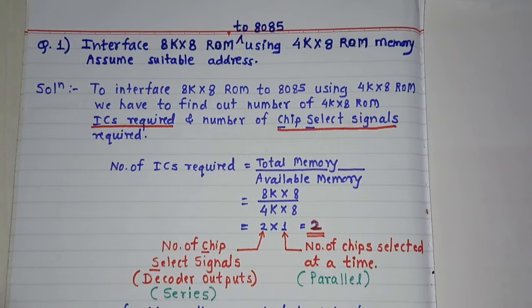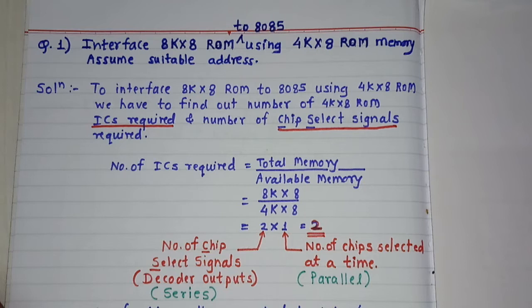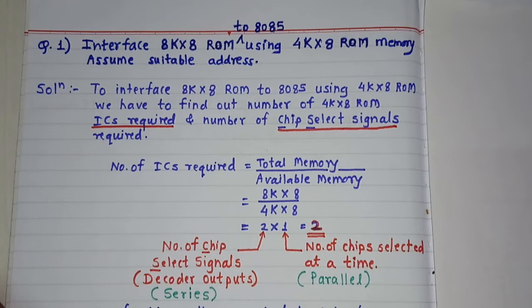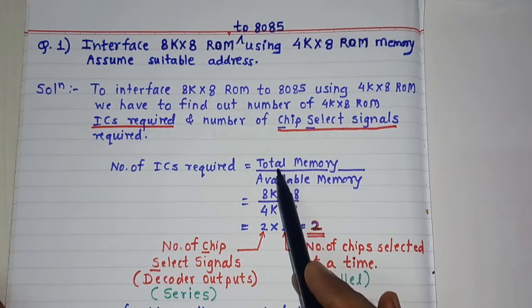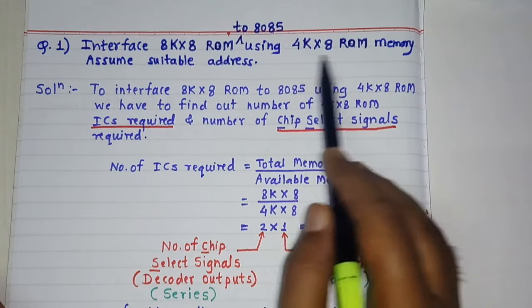Hello everyone. In this video I am going to show you how to interface 8K by 8 ROM to 8085 using 4K by 8 ROM memory. So here we have to assume the suitable address for interfacing purpose. The first thing is whenever this kind of problem is given we have to first of all find out how many memory ICs are required to interface to the 8085 microprocessor. The formula for that is: number of ICs required equals total given memory divided by available memory.